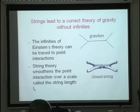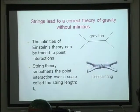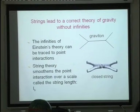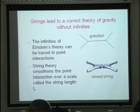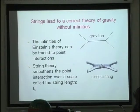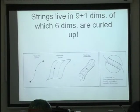This is why string theory is important for nature — because of the existence of this spin-2 particle, it contains general relativity. How does string theory cure the problems of general relativity? Because it's an extended object — the interaction is really stretched out. If you have a stretched-out interaction the theory is well-behaved, and all the problems of Einstein's theory of general relativity in the small can be resolved using this new framework.